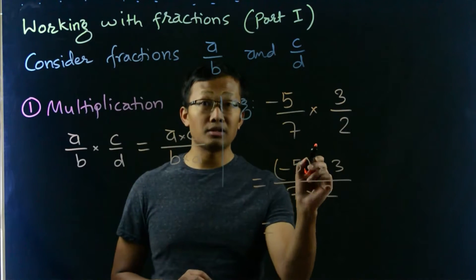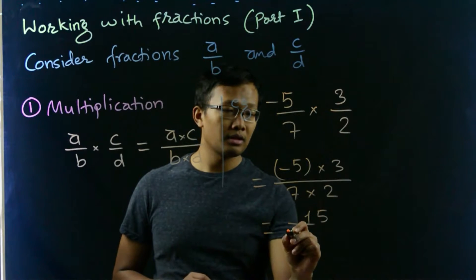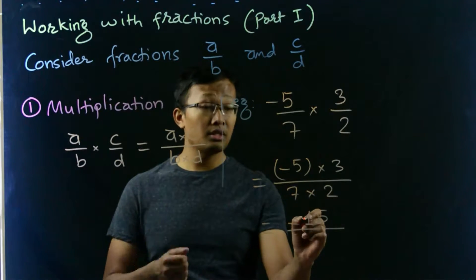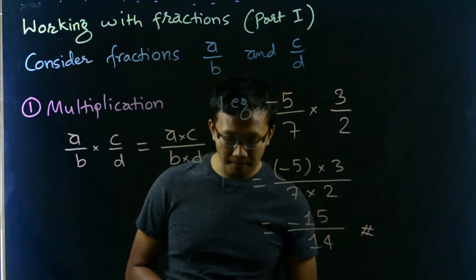Negative 5 times 3 is negative 15, divided by 7 times 2 is 14. So that's our answer. The second rule is the division rule.